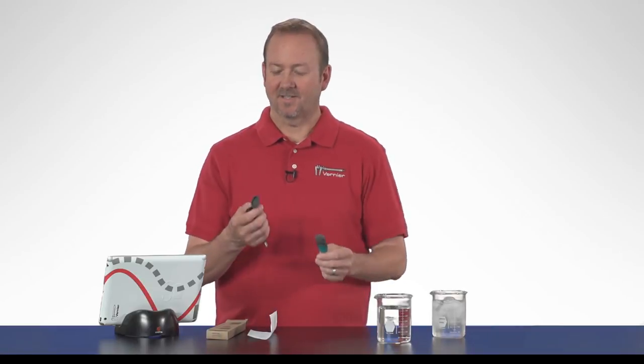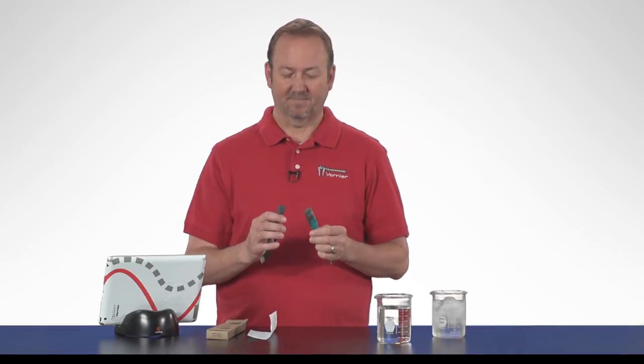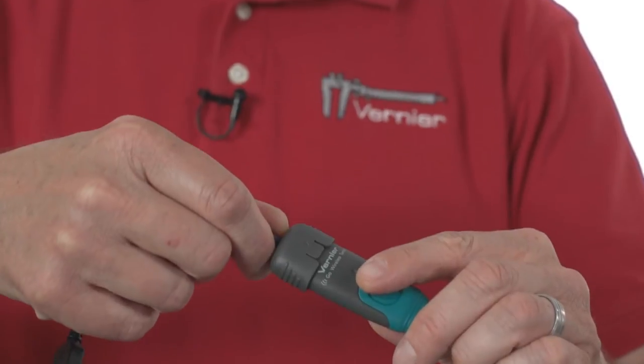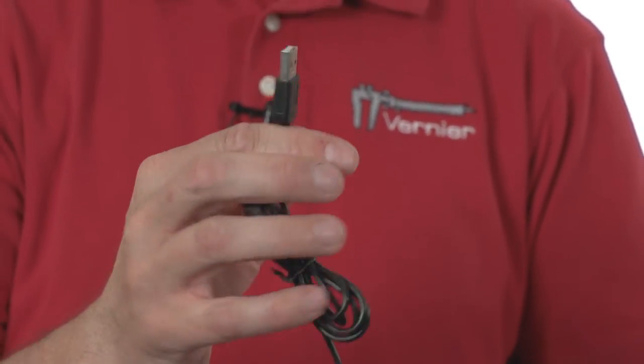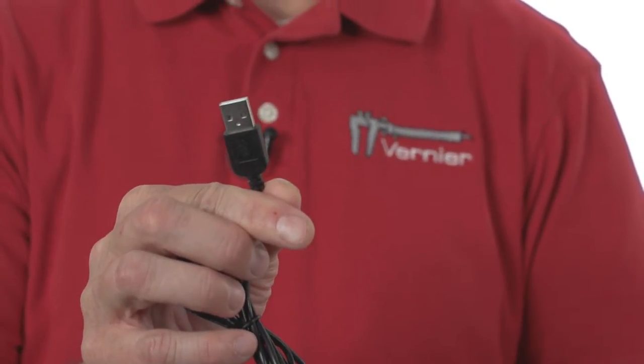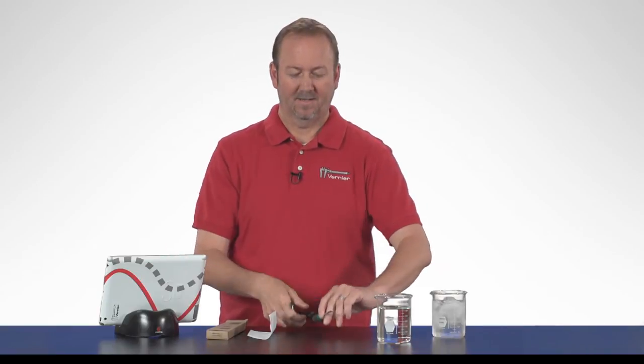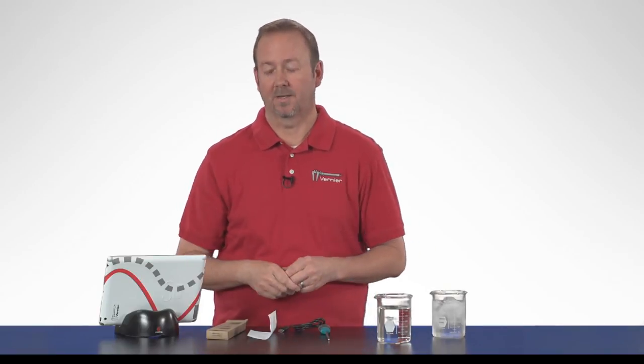The first thing on the instructions is to charge the temperature sensor. You do this by snapping on the charge cable to the end of the temperature sensor and plugging this end into a USB port. It takes about two hours to charge the Go Wireless Temp.